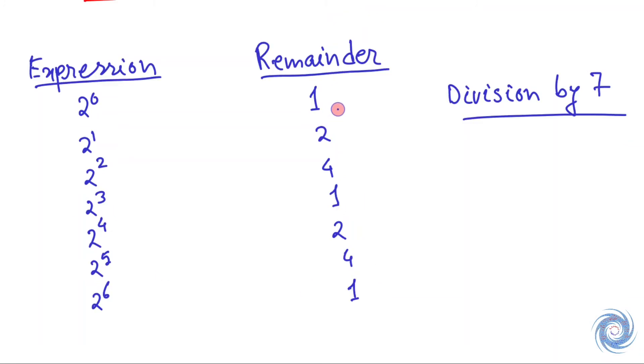If you observe the remainder carefully, you will get a pattern: 1, 2, 4, and this chain repeats every time. You can check that when the exponent is of the form 3n, the remainder is 1.